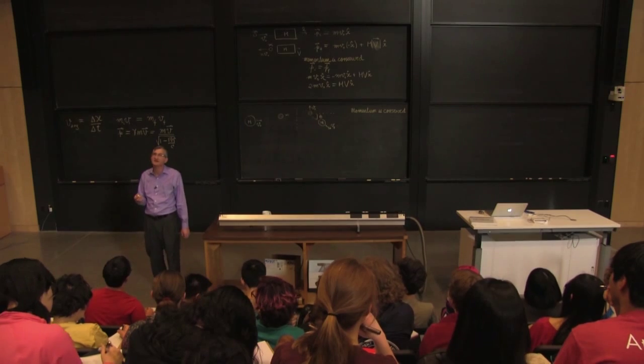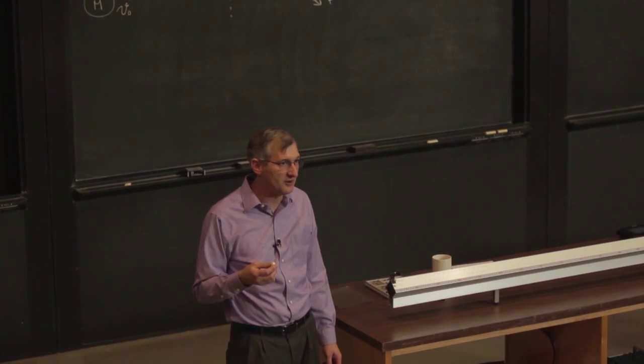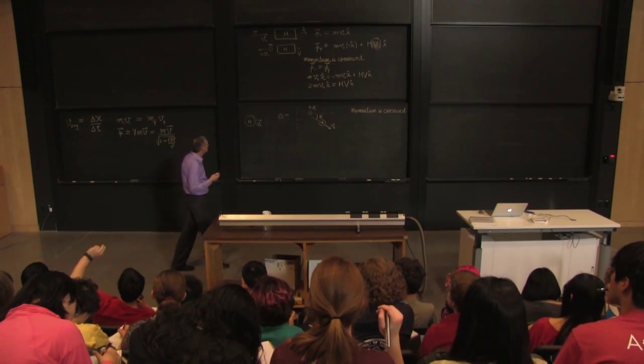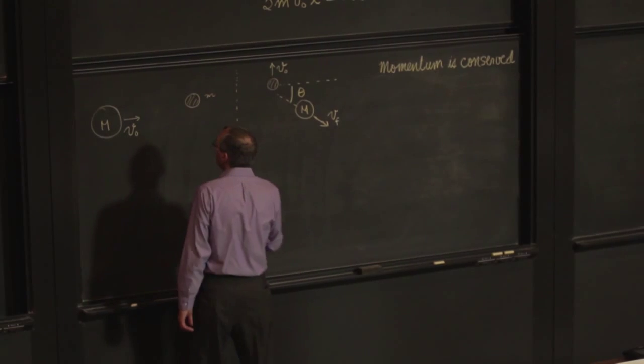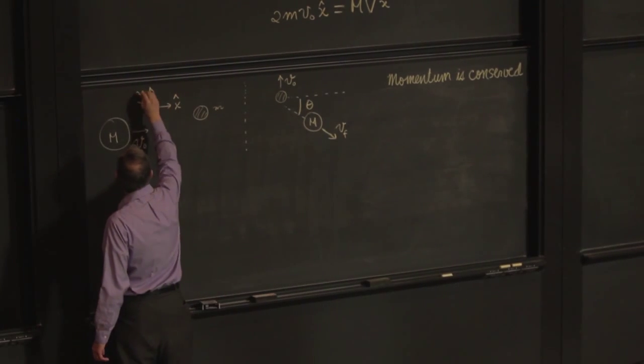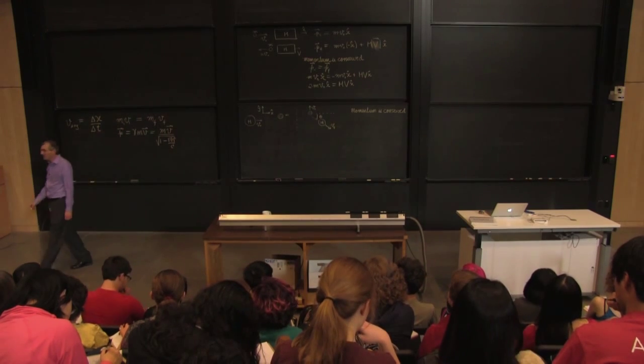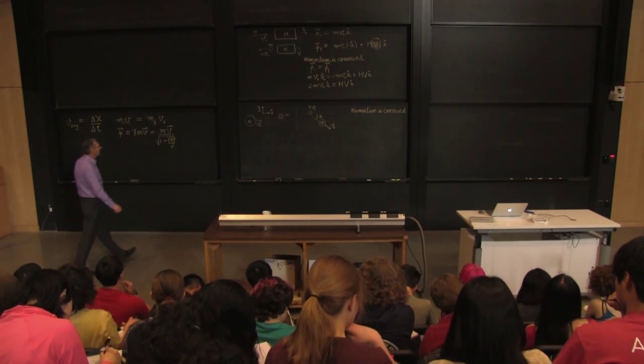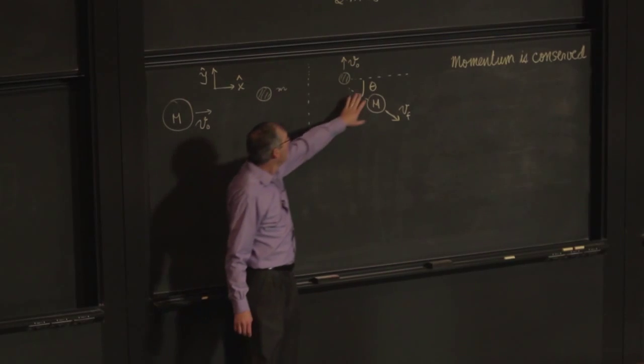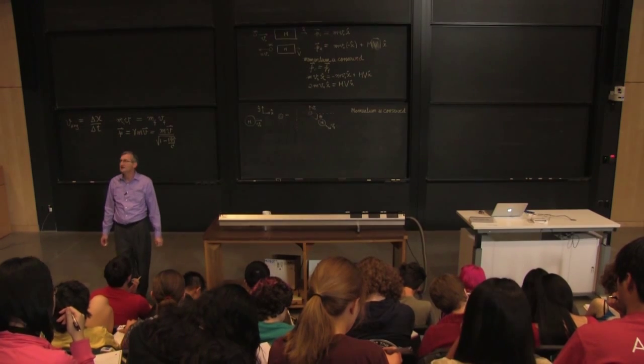But that still leaves an infinite number of coordinate frames. Let's define the positive x direction as the direction of the ball and the initial direction of the line. Something like this? Yeah. I like that one. That one is going to be particularly swell because we get rid of the y component of momentum in the initial picture, and our angle theta is measured with respect to one of the axes. That's going to simplify our lives. So let's go with that one.